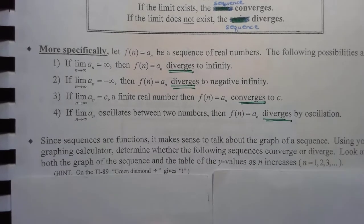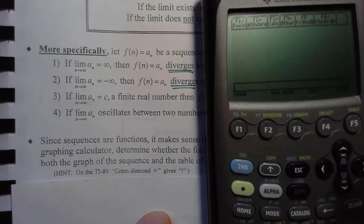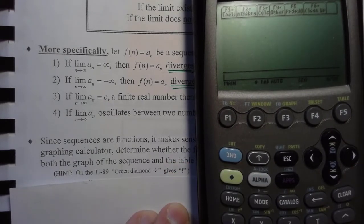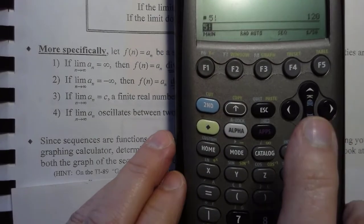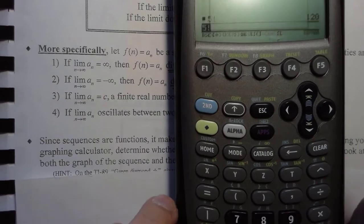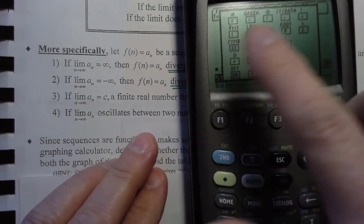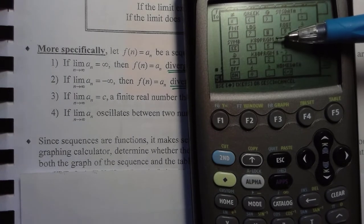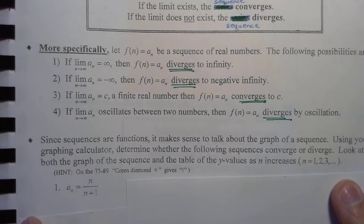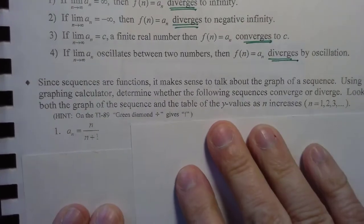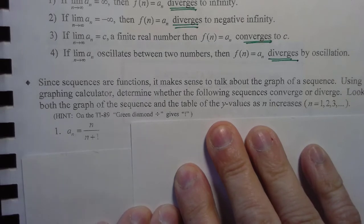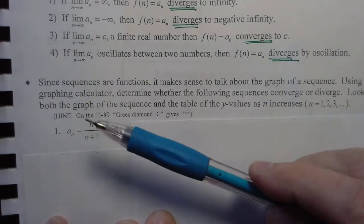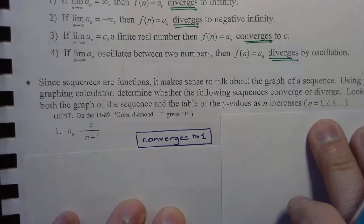You can work with sequences on your calculator. The factorial key: green diamond divide — so 5, green diamond divide gives 5 factorial, which is 120. Now, to determine if these converge or diverge as n goes to infinity, think about your exponent rules from section 3.5. For a rational function where the degree is equal, it's going to go to 1. For 1 half, 1 fourth, 1 eighth — as n gets bigger it looks like it's going to converge to 0.